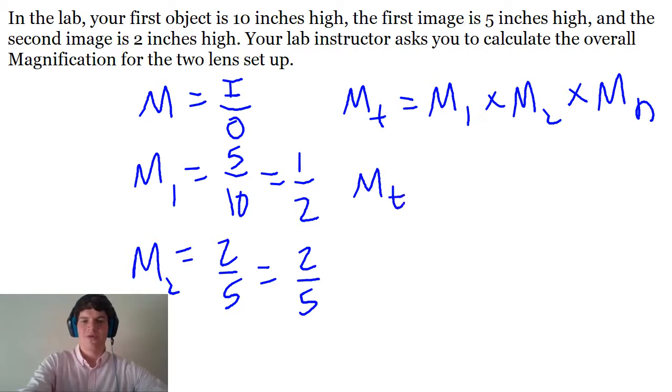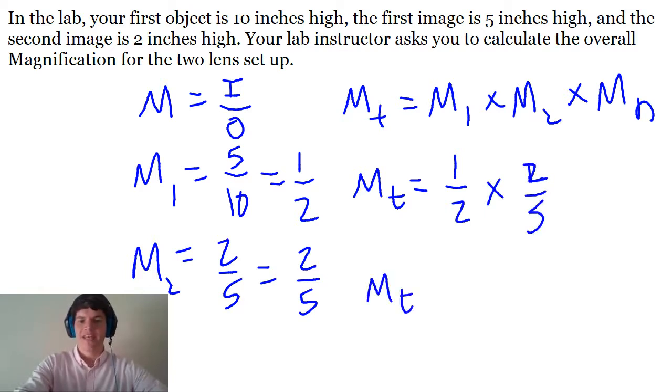Now if we plug it into the M total equation to calculate the total magnification for this system, I get 1 half times 2 divided by 5, which if we calculate that out, we should get 2 divided by 10, aka 0.2.